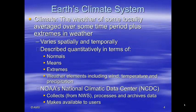Climate is defined as the weather of some locality averaged over some time period, plus the extremes in weather. These vary spatially and temporally, and are described quantitatively in terms of normals, means, and extremes of the weather elements — including wind, temperature, and precipitation.